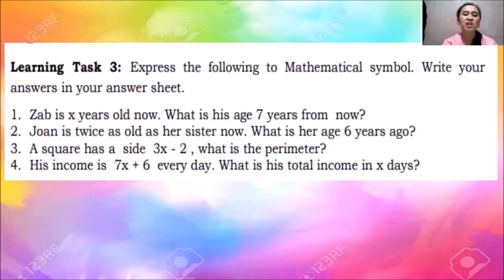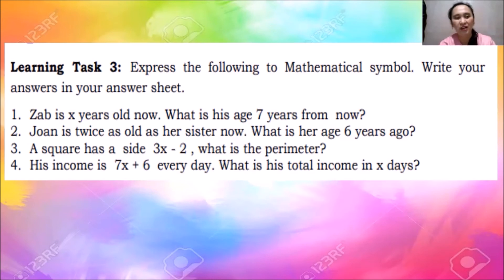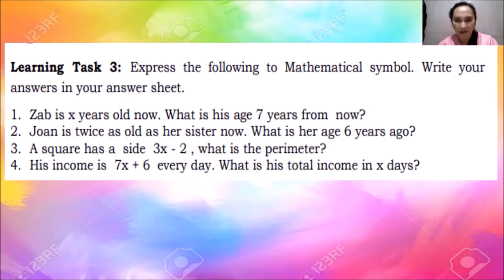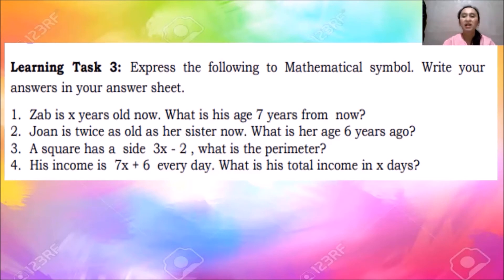For learning task three, express the following using mathematical symbols. Number 1: Sub is x years old now — what is his age 7 years from now? Number 2: Joanne is twice as old as her sister — what is her age 6 years ago? Number 3: A square has a side of 3x - 2 — what is the perimeter? Number 4: His income is 7x + 6 every day — what is his total income in x days? I hope the first part of the lesson on algebraic expressions is clear.